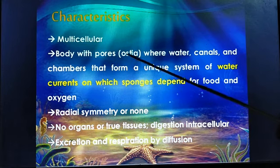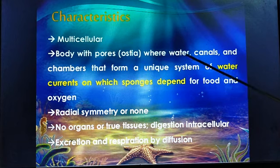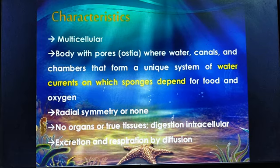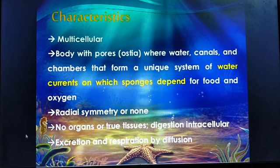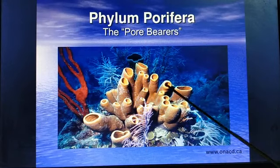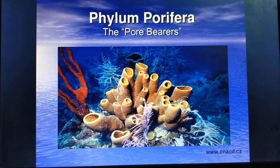The body has pores — called ostia — and water canals and chambers that form a unique system of water current, upon which sponges depend for food and oxygen. It is a canal-like system. Since they are fully aquatic with no terrestrial form, they are fully marine aquatic. All metabolic activities take place through this canal system.